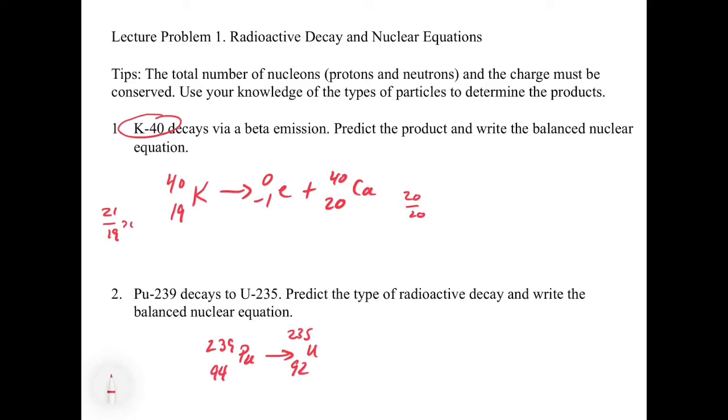Now we have to see what's the difference between these two. The atomic number changed by 2 and the mass number changed by 4. So we know that this must be an alpha particle. So the correct answer here is alpha decay, and this is our balanced nuclear reaction. I did that by looking at the difference between the product and the reactant to see what was missing.